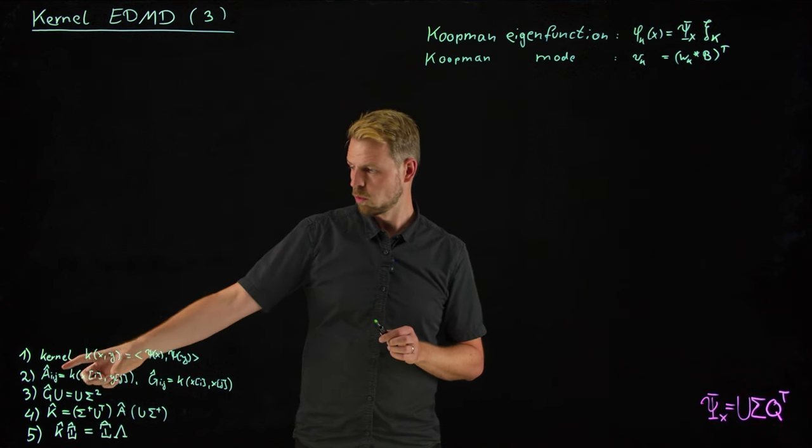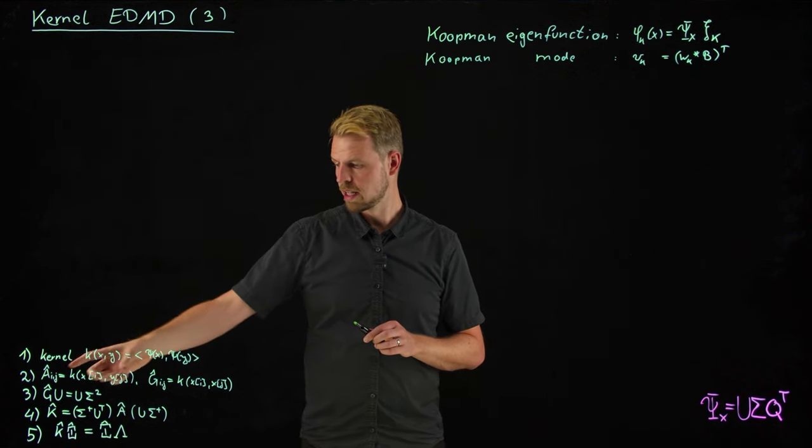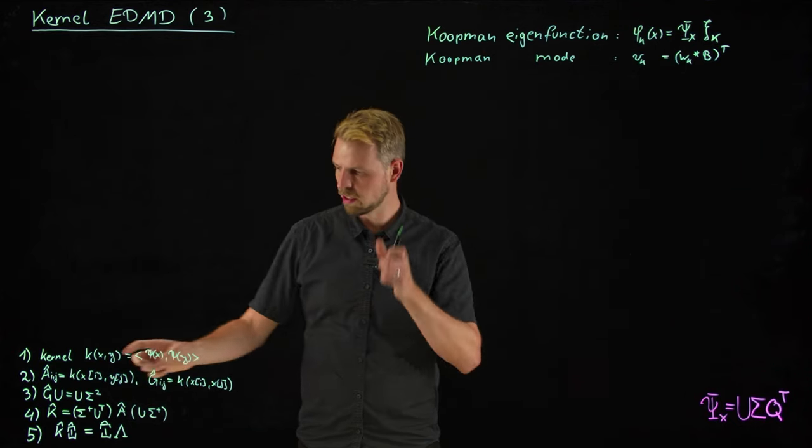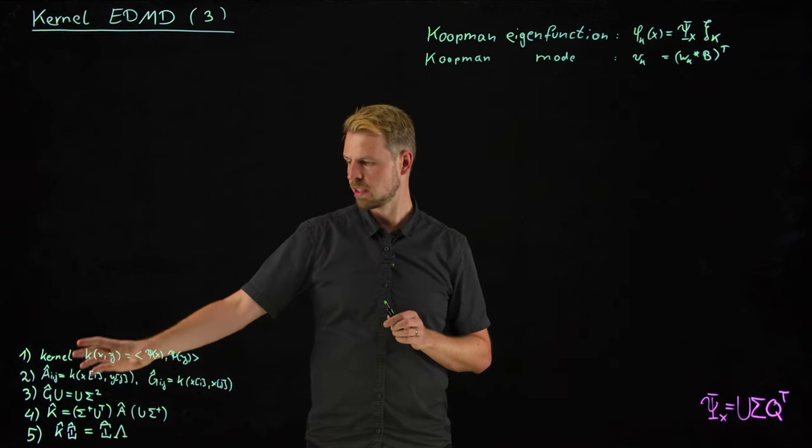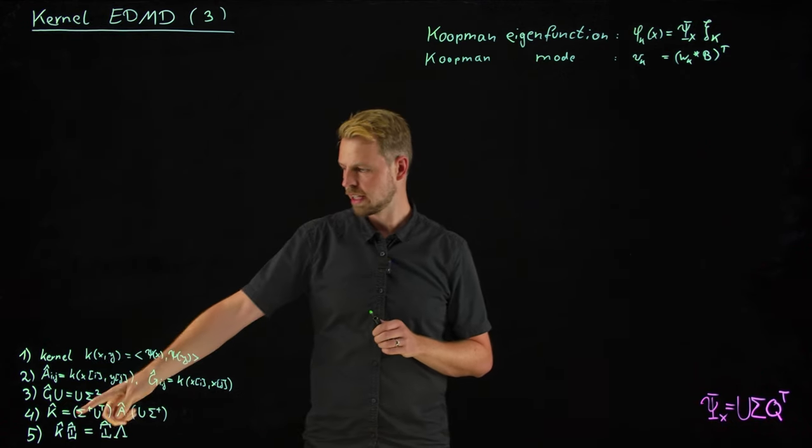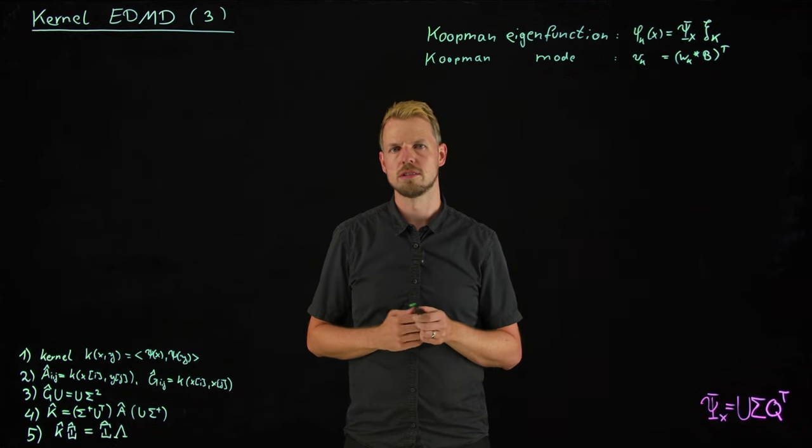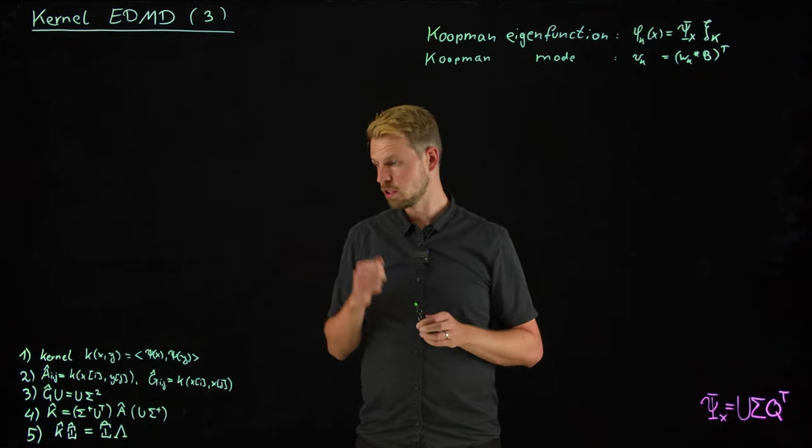And so then what we defined or found out is that you can define A and G matrices in their hat version which explicitly work on kernel evaluations. And you can then use these instead of the A and G matrices to compute a K-hat matrix which is in this M by M space, so only scales with the number of samples.